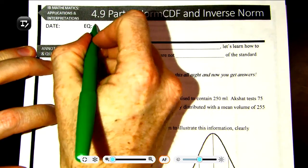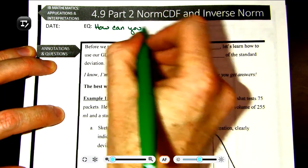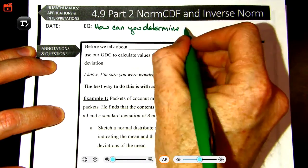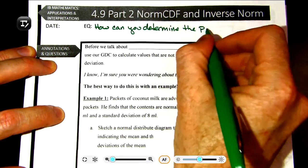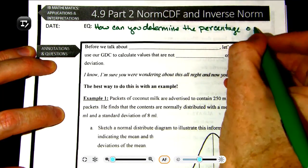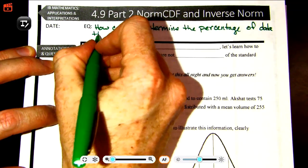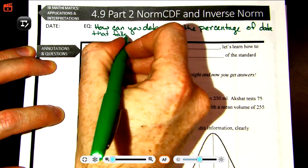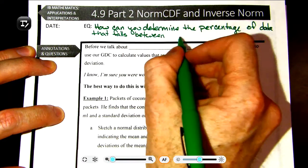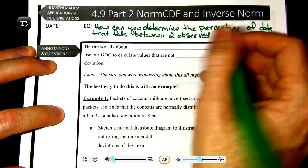Let's start off with the essential question: how can you determine the percentage of data that falls between two observed values?